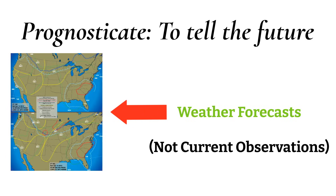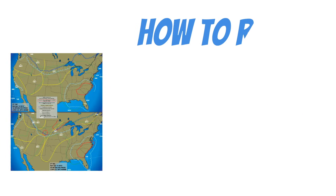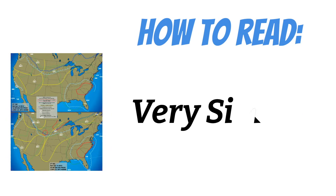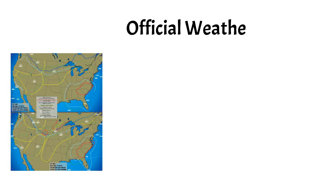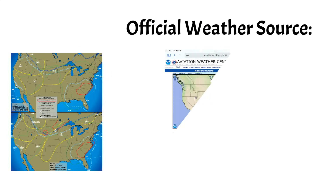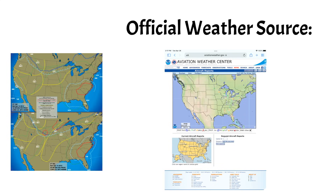With that in mind, let's talk about deciphering these things — and don't worry, these things are really easy to read. There are a ton of different places you can get these charts, but I'm going to show you how to get them from your official weather source, which is aviationweather.gov.